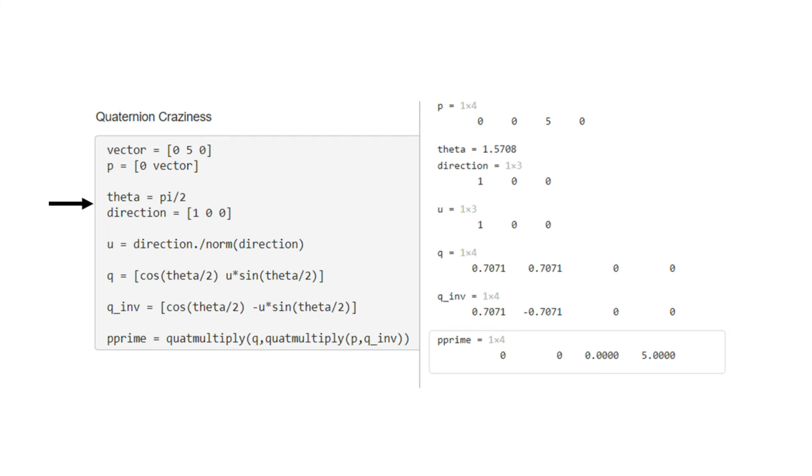Then if we define a direction and angle of rotation about that direction, we can define our rotation quaternion q and its complex conjugate like this. Then we just multiply using the built-in function, and voila, our rotated quaternion. Notice how the real part of the final quaternion is still zero, indicating it's just a vector.